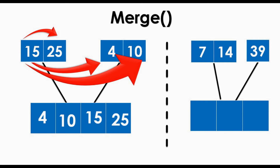The same process is done for the right index — we sort according to the size of values. Comparing 7 and 14, since 7 is less, 7 becomes our first value. Hindi na natin pwedeng gamitin si 7 kasi nakuha na. Comparing 14 and 39, 14 becomes our second value. Then 39 is placed down as the last number for our right index array.